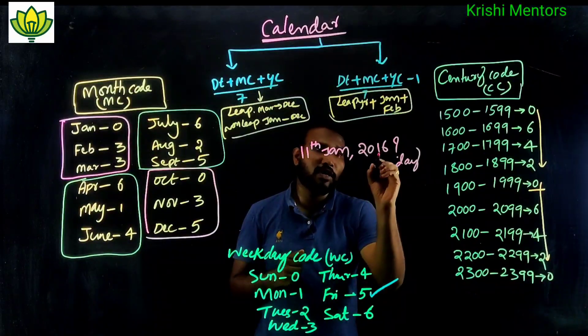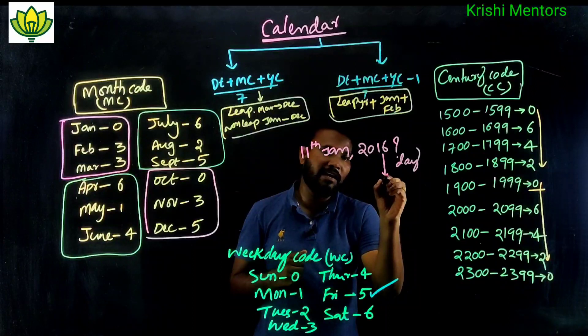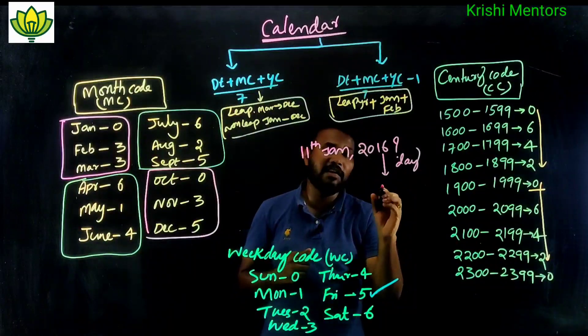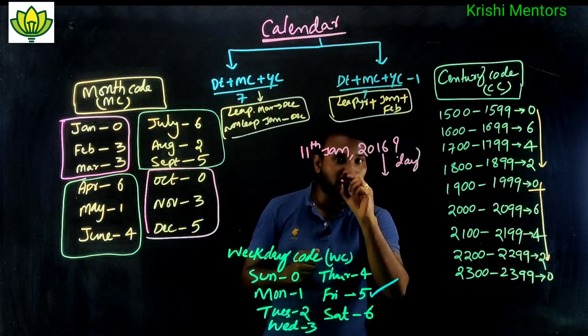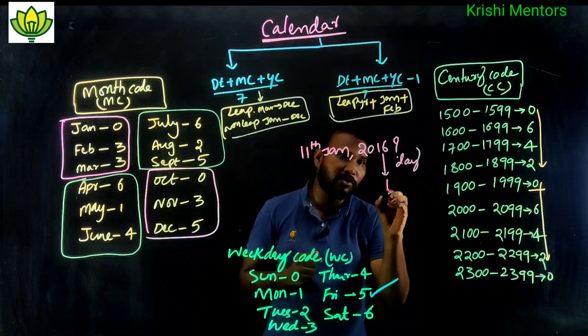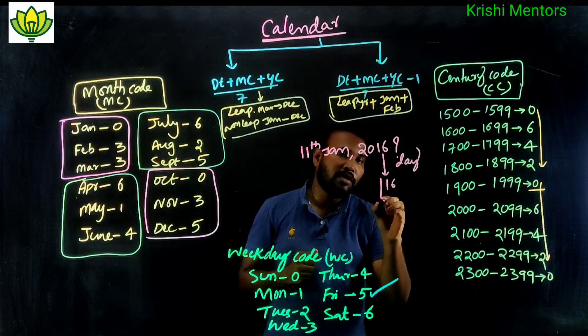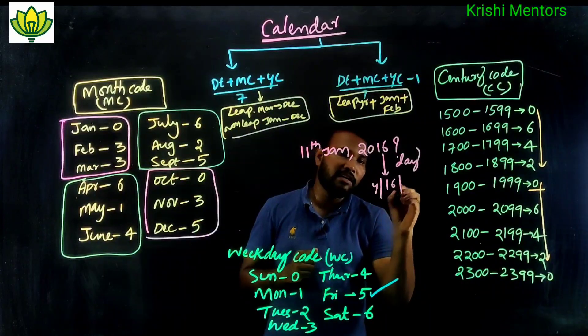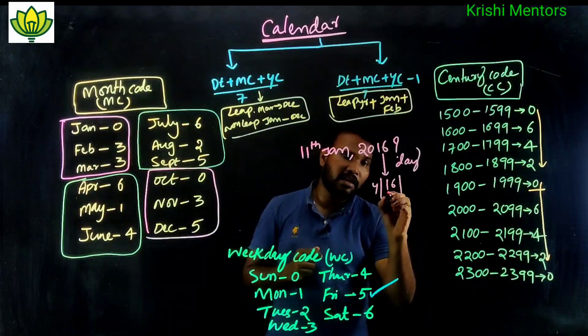First, check for leap year. Divide the last two digits: 16 divided by 4 equals exactly 4, with remainder 0.